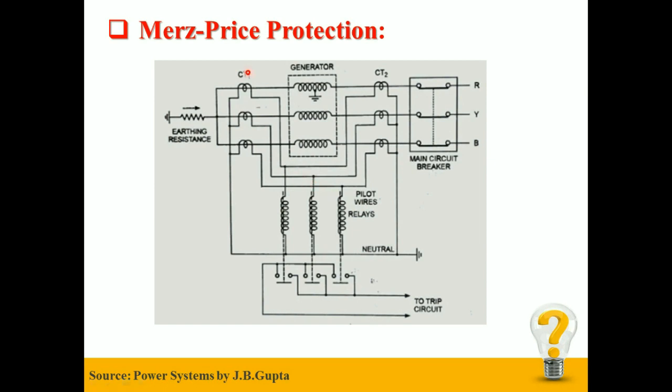Under normal working condition, the currents at both ends of each winding will be equal. So the EMF induced in the secondaries of the CTs will be equal, and no current will flow through the operating coil of the relays.